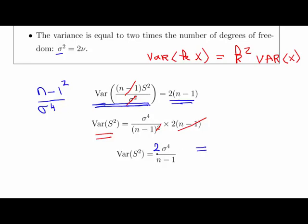So that should be a two there. Sorry, there's a two missing. Two times sigma squared over n minus one. That's the answer we're looking for. Essentially, that is the variance of s squared.